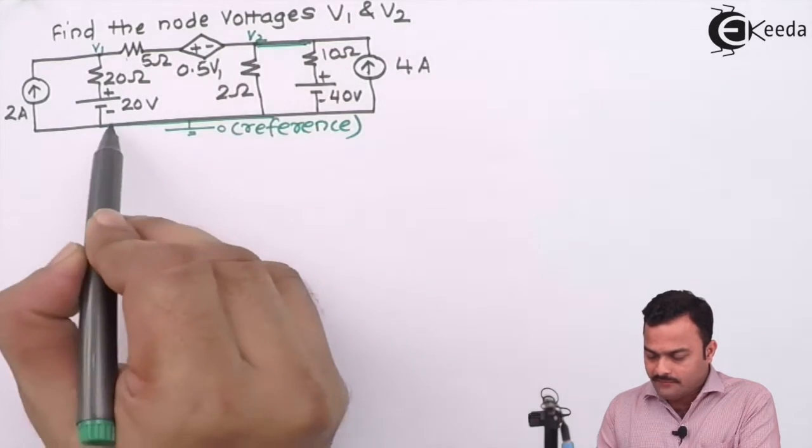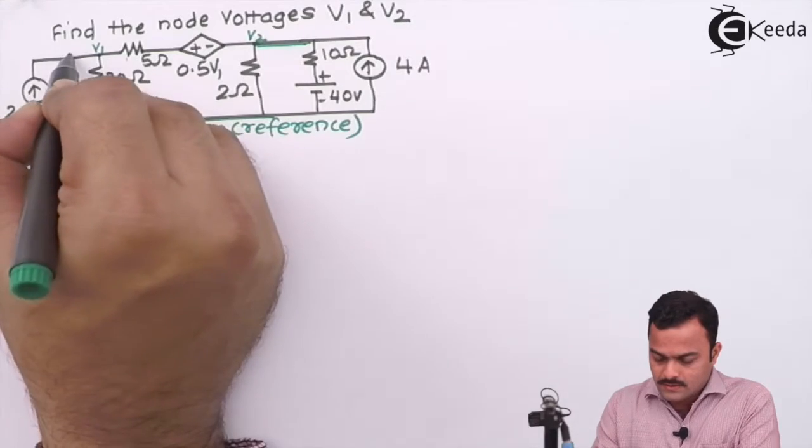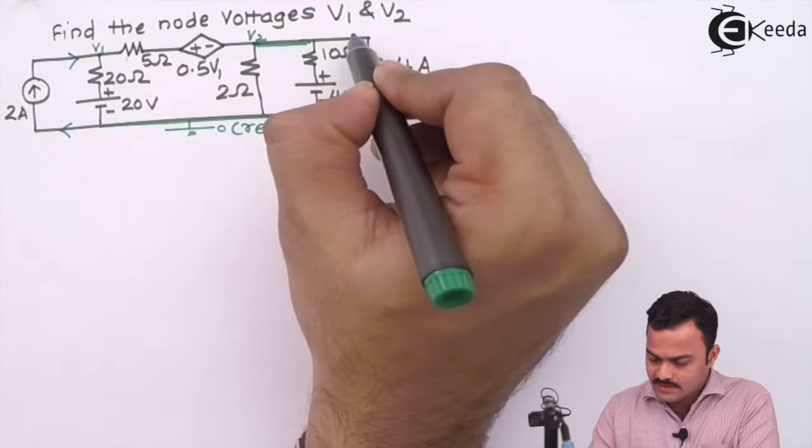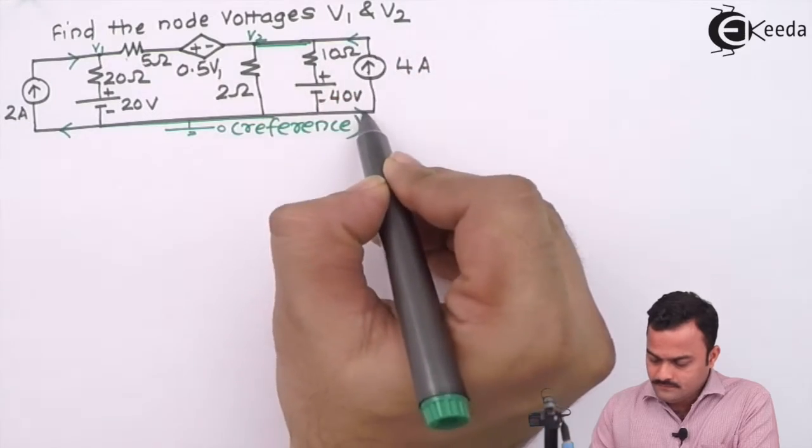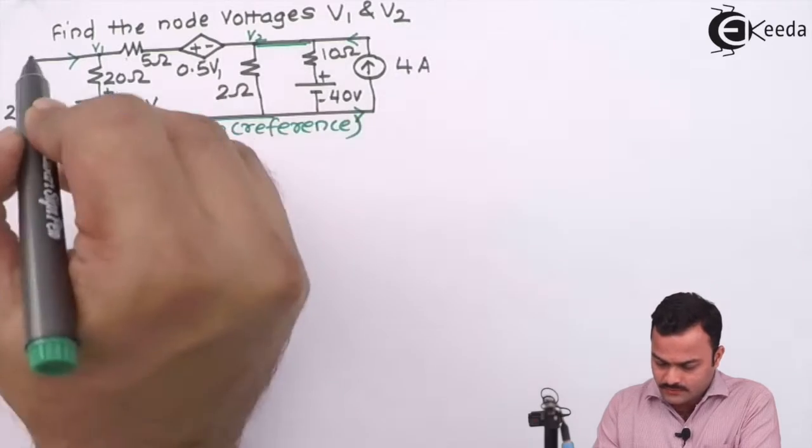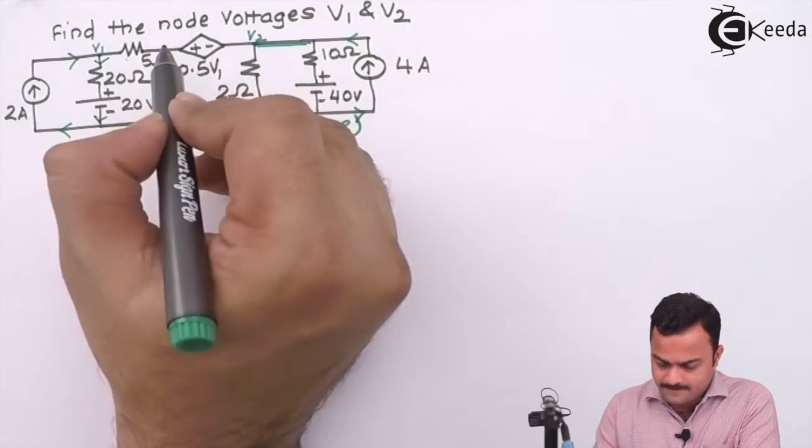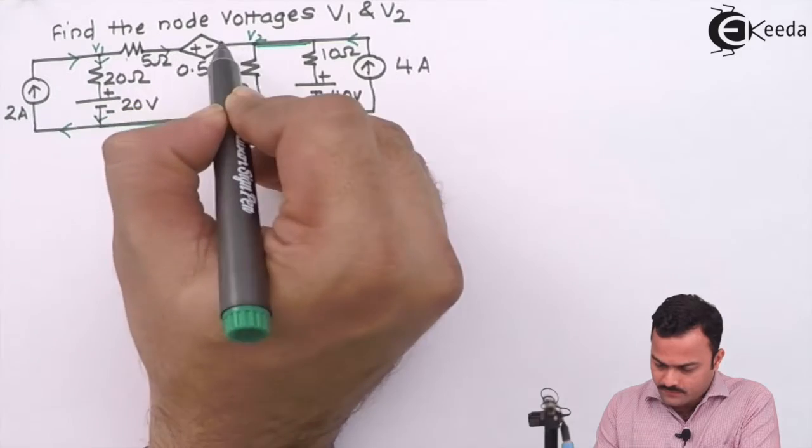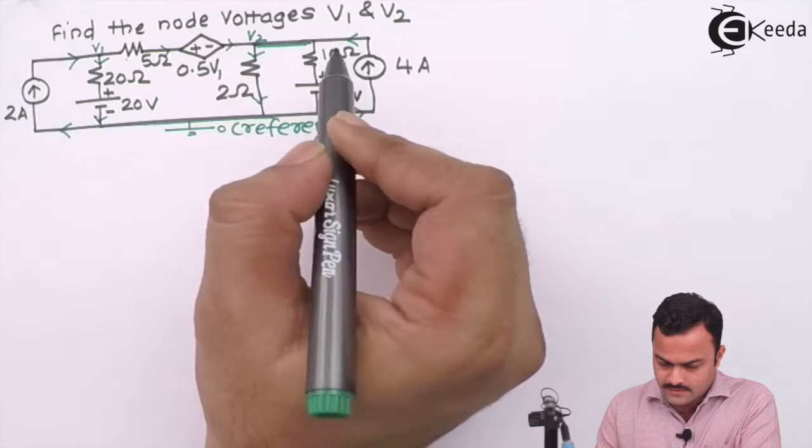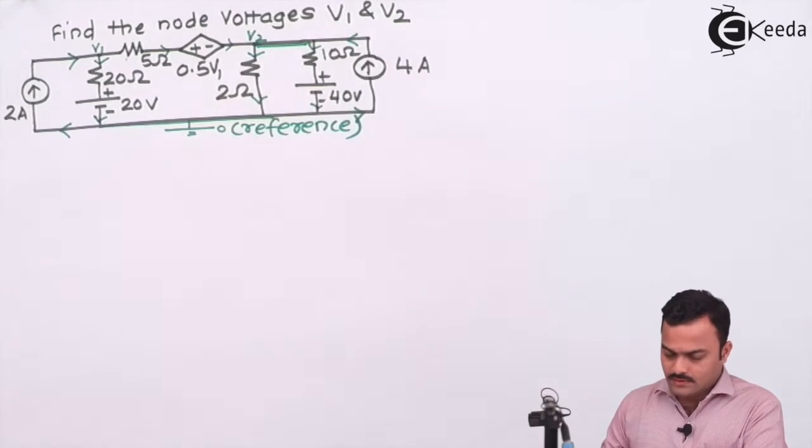Let's mark the current directions. As we discussed, we always give priority to a current source, maintaining its current direction as is, and for the remaining we can give any random current directions. Let's give the current direction for the 20 ohm like this, for 5 ohm like this, for 2 ohm in this manner, and for 10 ohm also downward. All current directions for branches are marked.